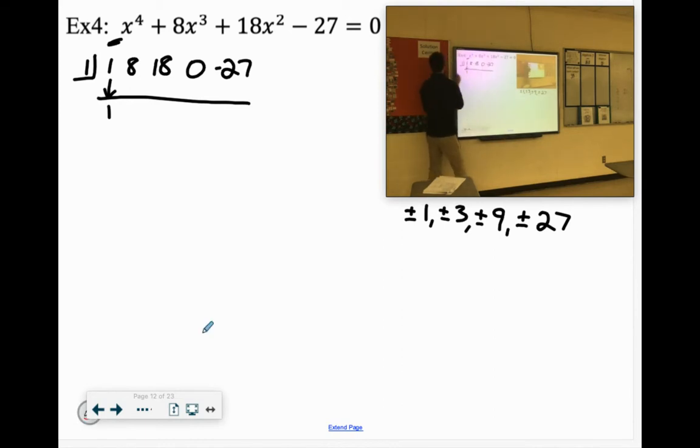Let's see, 1 times 1 is 1, plus 8 is 9, 1 times 9 is 9, plus 18 is 27. 1 times 27 is 27, plus 0 is 27. 1 times 27 is 27, plus negative 27 is 0.